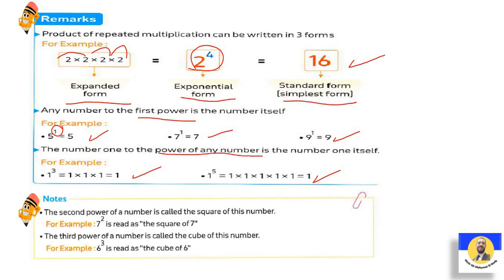The second power of a number is called square. يبقى 7 to the power 2 تطلع 7 square أو the square of 7. طيب لو هي third power: 6 to the power 3 أو 6 to the exponent 3، فنقول عليها the cube of 6 أو 6 cubed.